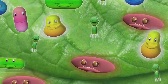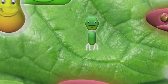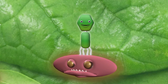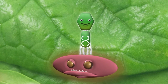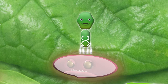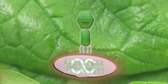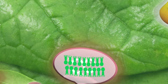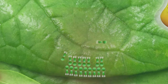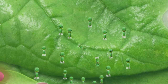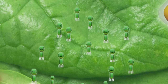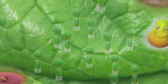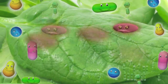Bacteriophages are able to specifically target bacterial species. They attach to their targeted bacteria and inject their DNA into the bacterial cell. The phage now uses the bacterial cell to replicate itself. Phages then burst the bacterial cell, allowing progeny phages to escape so that they can attach to other cells of their targeted bacteria. And the process goes on.